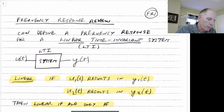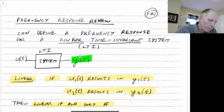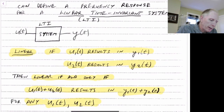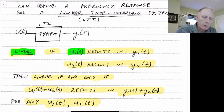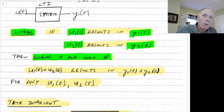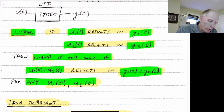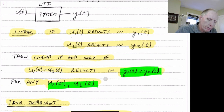So consider the case shown here. We have a system, we have an input u of t, and there's an output y of t. We'll say this is a linear time-invariant system. If the system is linear, if u1 results in an output y1 of t, u2 of t results in an output y2 of t, and that should be true for any u1 or u2. So that defines what a linear system is.